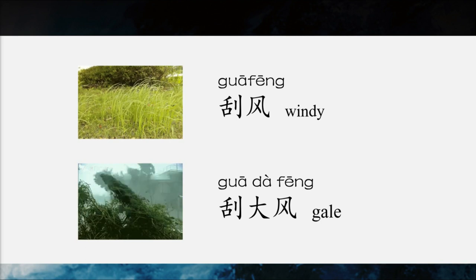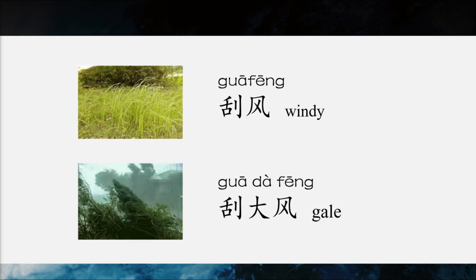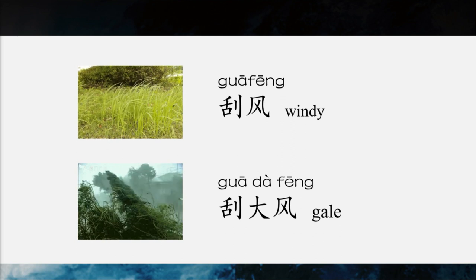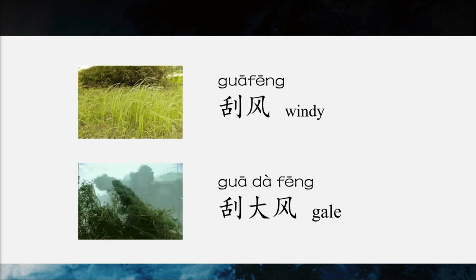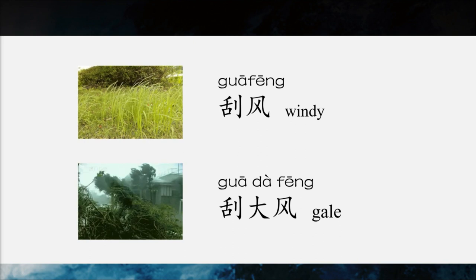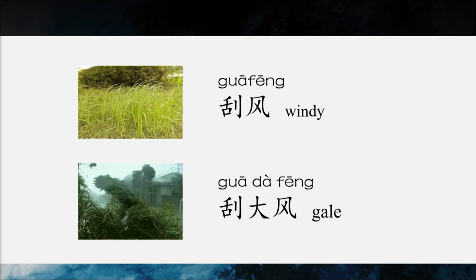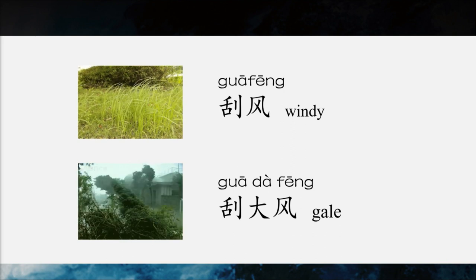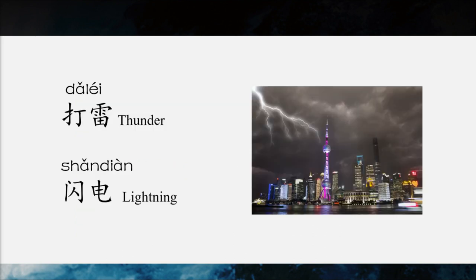So 刮风 would be 'windy', 刮大风 would be 'a gale', 刮台风 would be 'a typhoon'. During a typhoon, in addition to heavy rain and strong winds, there can be thunder and lightning too. What are the words for thunder and lightning? 刮台风的时候，除了下大雨、刮大风，有时还会打雷和闪电。So 打雷 is thunder, 闪电 is lightning.